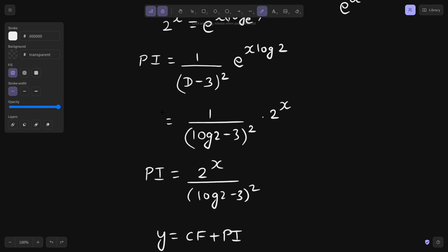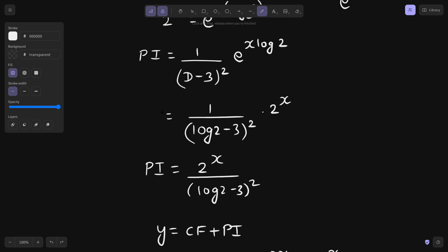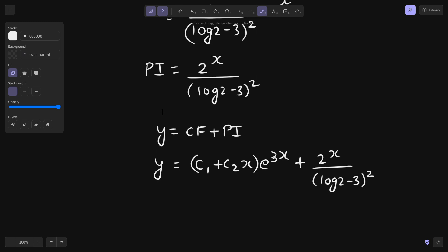If it would have been something like 1 upon d minus 3 whole square, then this cannot be written in numerator because this is a function operator. In that case it cannot be written in numerator. But because now log 2 minus 3 whole square is a constant, this can be written like this.